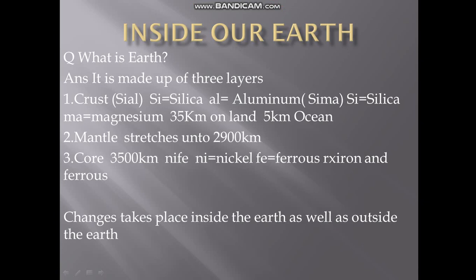Hello everyone, today we are going to start the second chapter of Geography Class 7th - 'Inside Our Earth'. In this chapter we are going to talk about what is earth, what are the different parts in which earth is divided, and what it is made up of. Earth is a globe-like structure which is made up of different layers of soils. We have divided earth into three different layers: crust, mantle, and core.